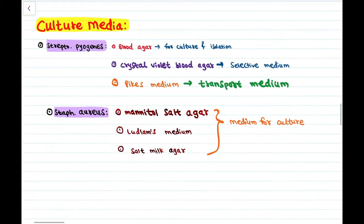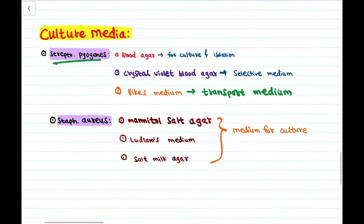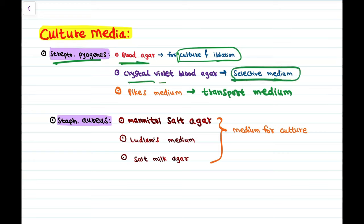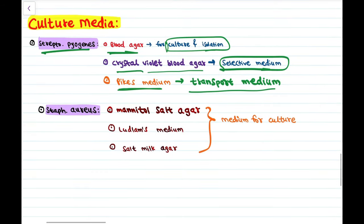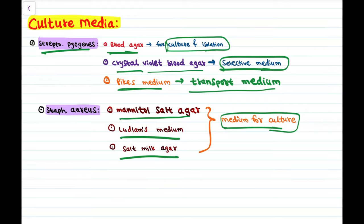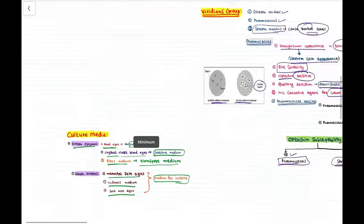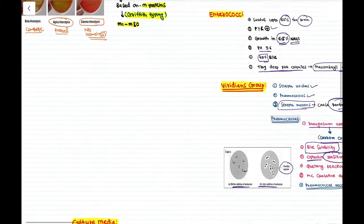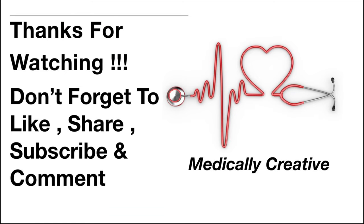Culture media for Streptococcus pyogenes: blood agar for culture and isolation, crystal violet blood agar as selective medium, and Pike's medium as transport medium. For Staphylococcus aureus, media used include mannitol salt agar, Ludlam's medium, and salt milk agar.